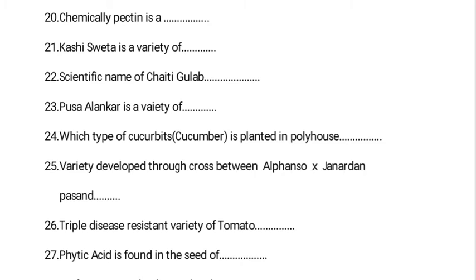In poly house cultivation, cucumber is mostly planted. Parthenocarpic and gynoecious varieties of cucumber are mostly planted in poly houses. The variety developed through a cross between Alphonso and Janardhan Pasand is Arka Anmol, and the cross of Amrapali with Janardhan Pasand gave Ambika. Arka Anmol was developed at IIHR, and Ambika was developed at CISH Lucknow.